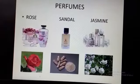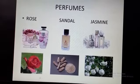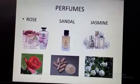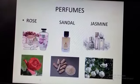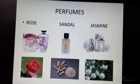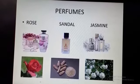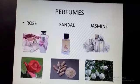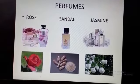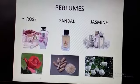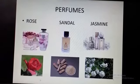Now the next one is perfumes. Perfumes are obtained from different flowers and wood. The first one is rose perfume and it is obtained from roses. The second one is sandal perfume; it is obtained from sandalwood. The third one is jasmine; the jasmine perfume is obtained from jasmine flowers — as you can see, these white flowers are jasmine flowers. The flowers of many plants and wood such as sandalwood are used in the making of perfumes.